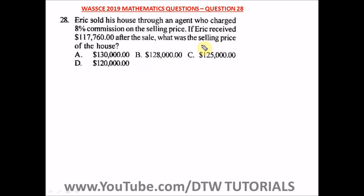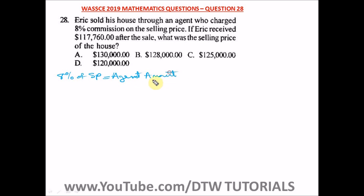We're looking for the selling price of the house. We know Eric sold his house through an agent who charged eight percent commission on the selling price. So eight percent of the selling price (SP) equals the agent amount. Also, the selling price equals the amount Eric received — $117,760 — plus the agent amount.